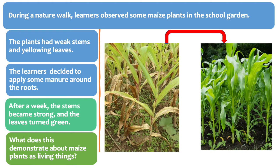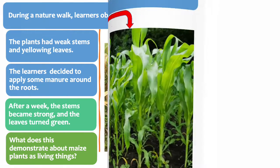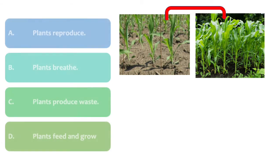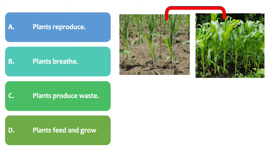What does this demonstrate about maize plants as living things? A. Plants reproduce. B. Plants breathe. C. Plants produce waste. And D. Plants feed and grow.